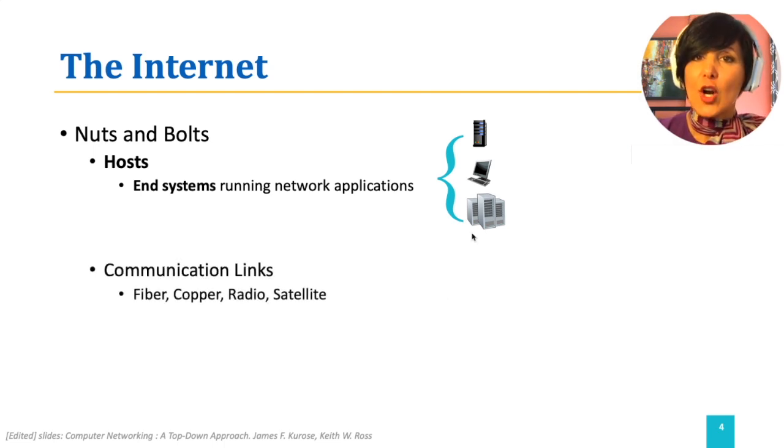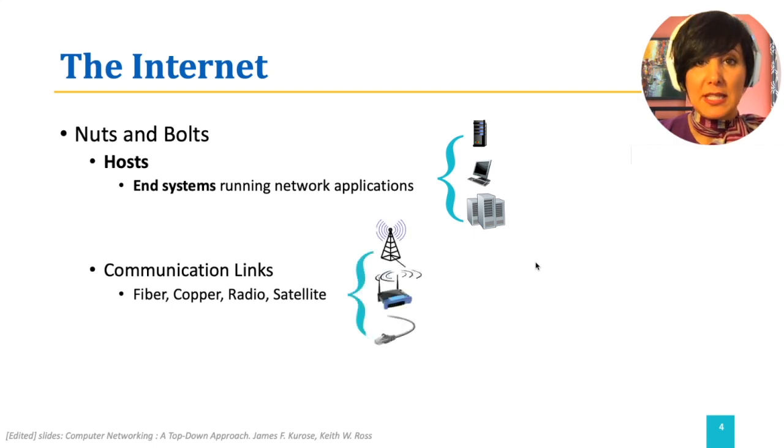These end systems are connected to each other through communication links. Communication links can use different types of media, for example, fiber, copper, or wireless links using radio spectrum. Different links have different rates of transmission. We will discuss a few examples of communication links later.